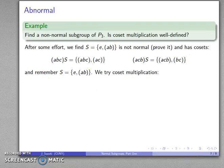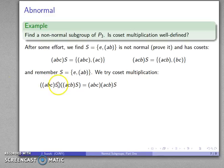Let's see what happens. We'll try coset multiplication and take the product of these two - this with itself. Our definition of coset multiplication will multiply the representatives (abc) times (acb), and that gives us the set S once again.